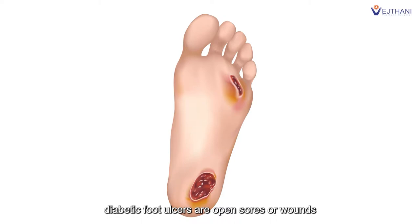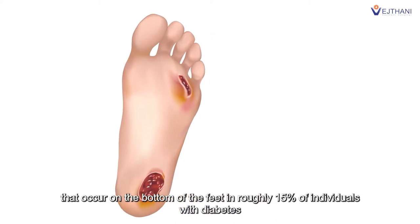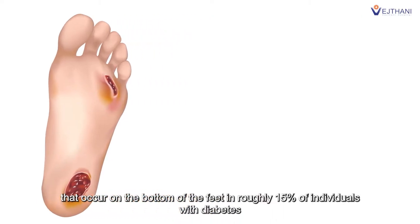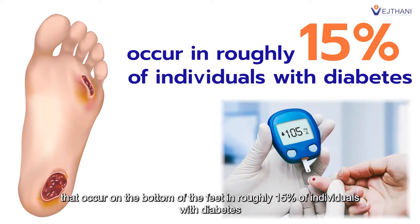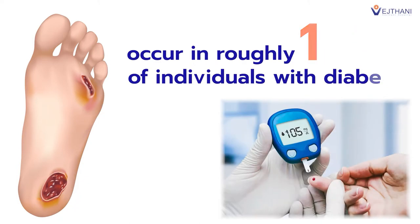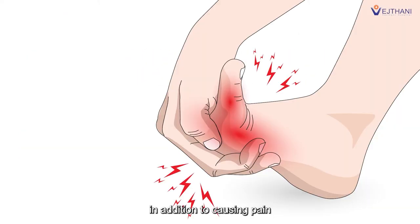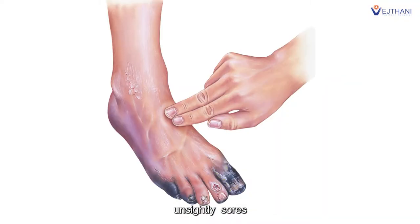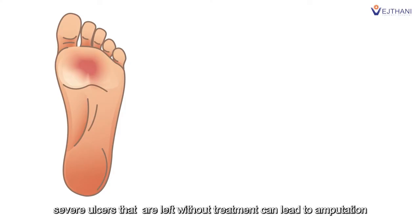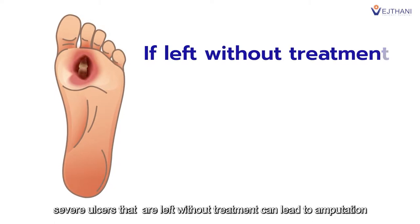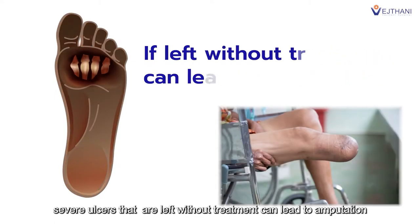Diabetic foot ulcers are open sores or wounds that occur on the bottom of the feet in roughly 15% of individuals with diabetes. In addition to causing pain, unsightly sores, and loss of mobility, severe ulcers that are left without treatment can lead to amputation.